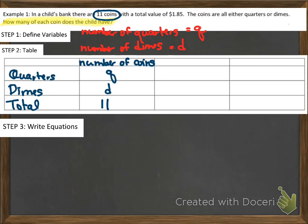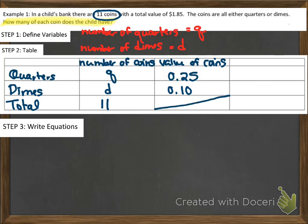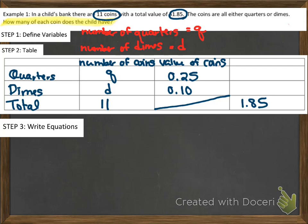What else do we know about the coins besides their number? We know the value of the coins. It's assumed we know that quarters are worth 25 cents and dimes are worth 10 cents. You could add those together to get 35 cents, but that's not useful, so we leave that last box blank. We haven't used the value $1.85 yet — that's the total amount of money in the child's bank, so $1.85 goes in the last box. We still need to know how much of that money comes from quarters and how much from dimes.